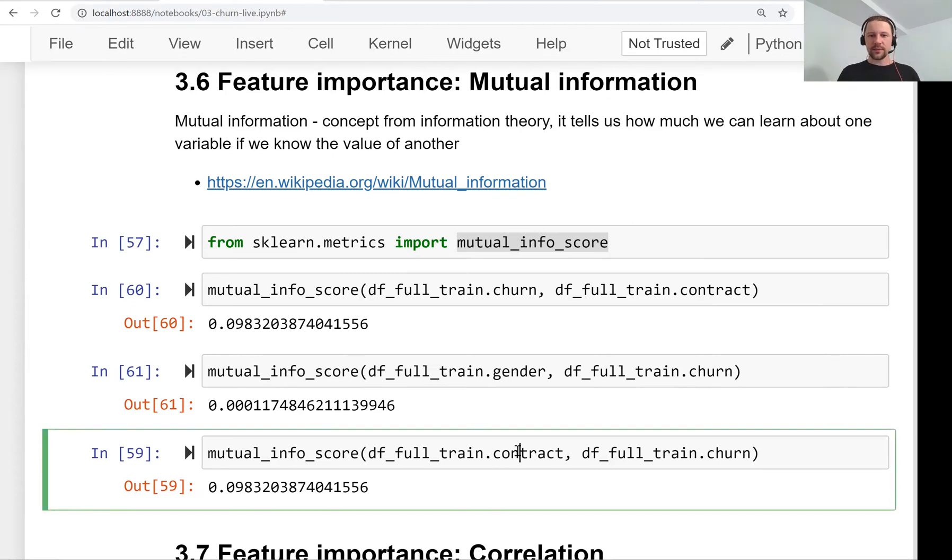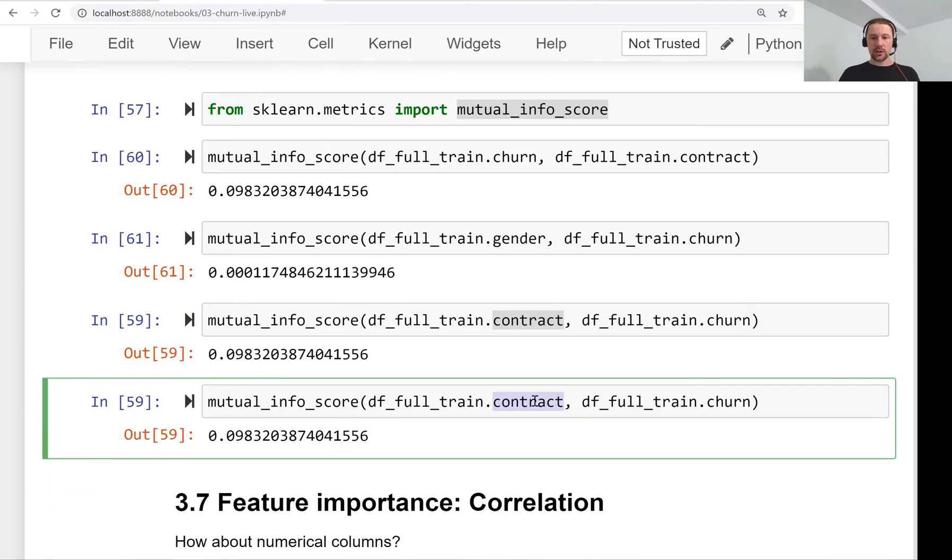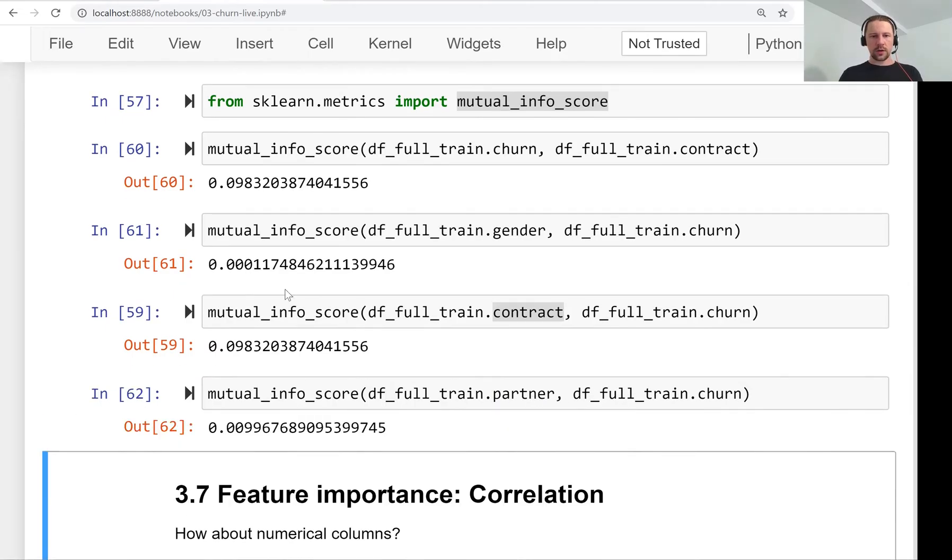So for us, this information we get from learning about the contract is far more important than what we get from learning about gender. We can also check other variables, for example partner, and for partner we see that it's definitely more important than gender but far less important than contract.